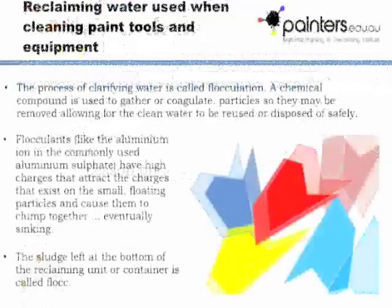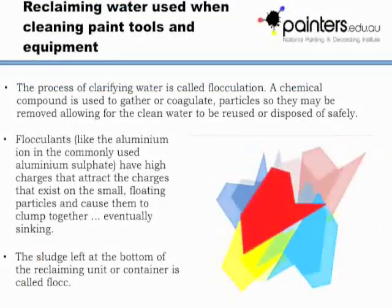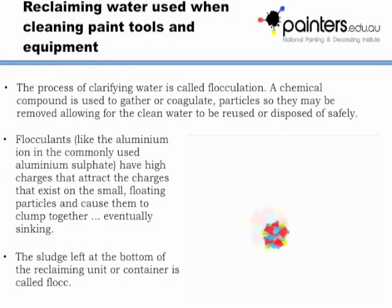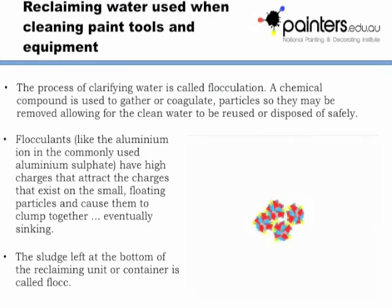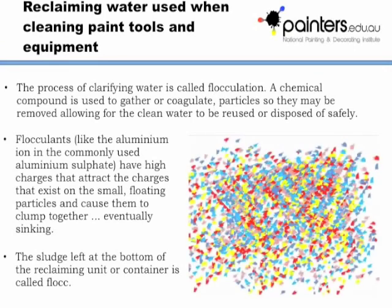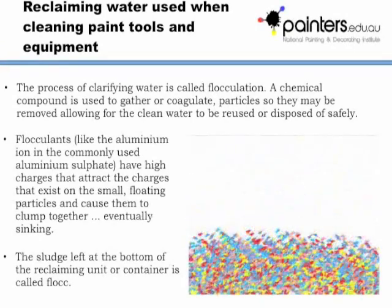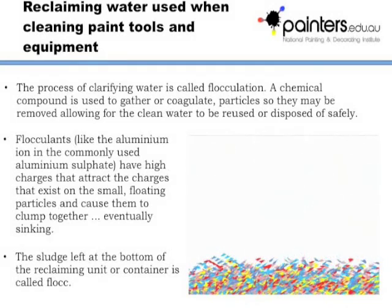The process of clarifying water is called flocculation. A chemical compound is used to gather or coagulate particles so they may be removed, allowing the clean water to be reused or disposed of safely. Flocculants like the aluminium ion in the commonly used aluminium sulphate have high charges that attract the charges that exist on the small floating particles.